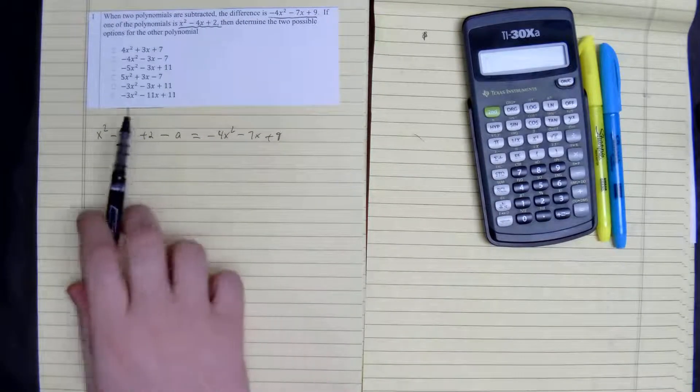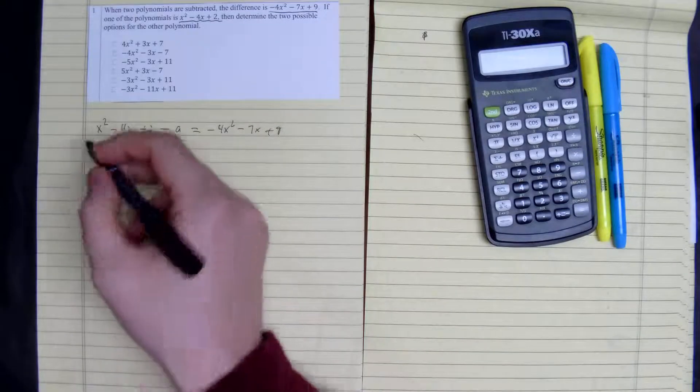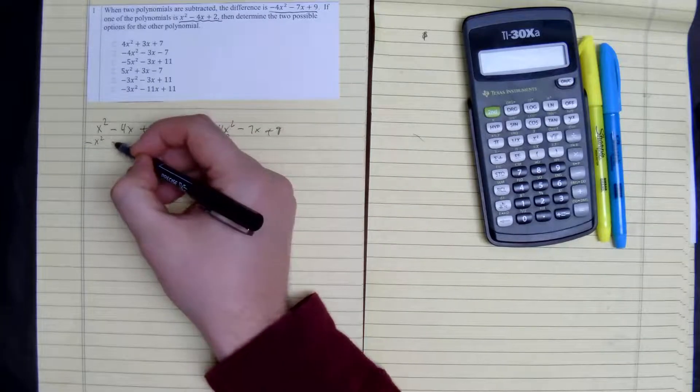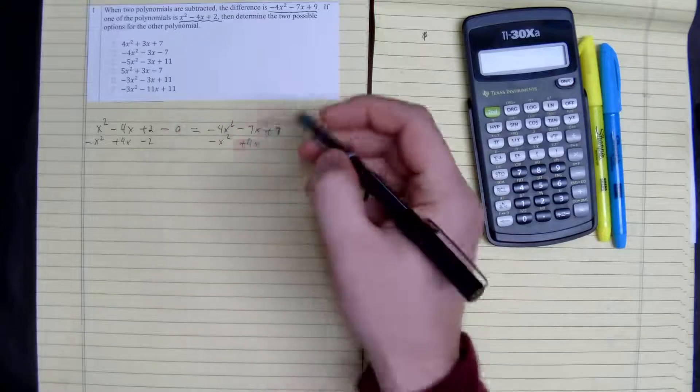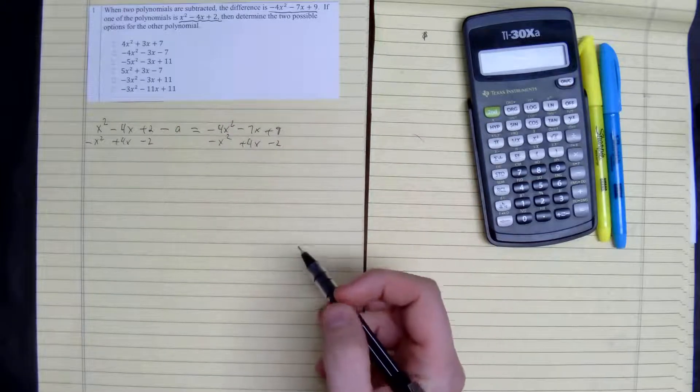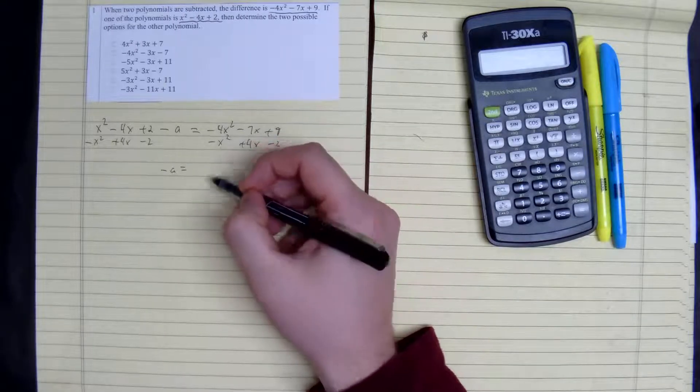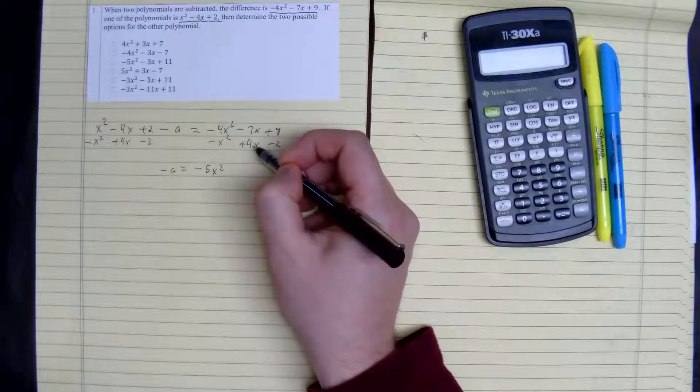We need to get these together for our first equation. So let's just do the opposite of everything. Subtract x squared, add 4x, subtract 2, and we get negative A is equal to negative 4 minus negative 1, negative 5x squared, negative 7 plus 4, negative 3x plus 7.